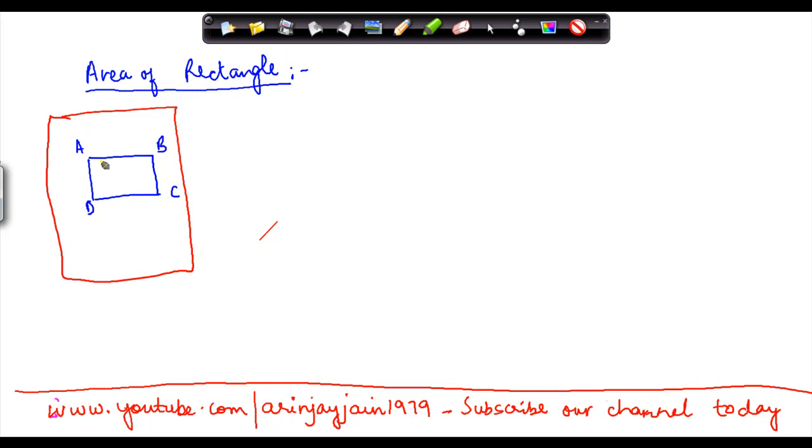Now this rectangle ABCD is acquiring a particular region on this piece of paper. This region which is being acquired by this rectangle is called the area of the rectangle.